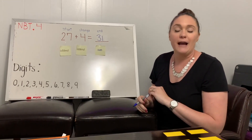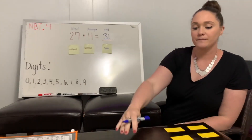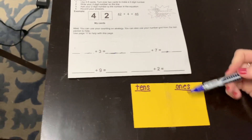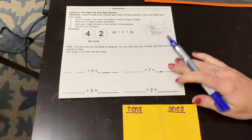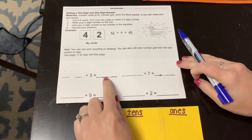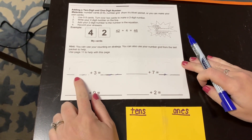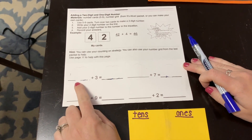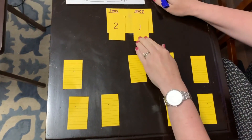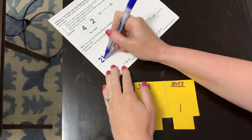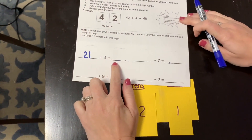What I'd like you to do now is take your packet and flip to page 4. You're going to see a page that looks similar to this, but there'll be a few more problems down underneath. What this page would like us to do is fill in an addend and then find the sum. So this equation reads blank plus 3 equals blank. In order to find this addend, we're going to take two of our digit cards and flip them over. My number is 21. On my paper, I'm going to record that: 21 plus 3 equals blank.